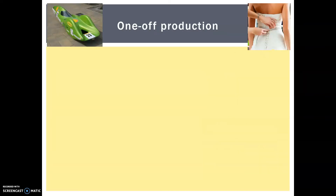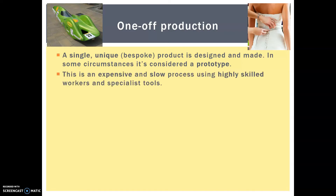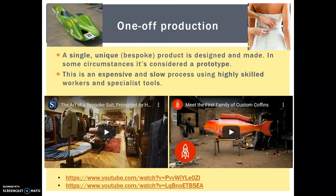So let's start with one-off production. It is a single unique or bespoke product designed and made. In some circumstances it's considered a prototype. This can be an expensive and slow process because it uses highly skilled workers with very specialist tools. Here I've got two introductory videos, one about making a suit and one about making custom coffins — give that one a watch.